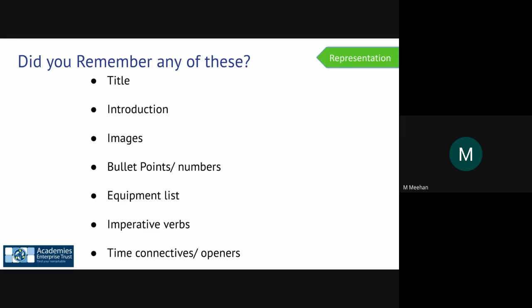What did we remember? Did you remember any of these? Did you remember that one of the key features was title, the introduction, the fact that they're images and pictures, bullet points and numbers, the equipment list, imperative verbs. I hope you all remember that one and I hope you all remember your last one which is the time connectors or time openers. So they're really important. They're the things we need to remember and be able to identify when we're looking at instruction text.